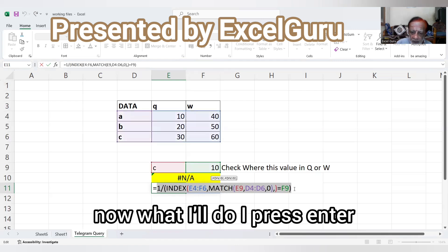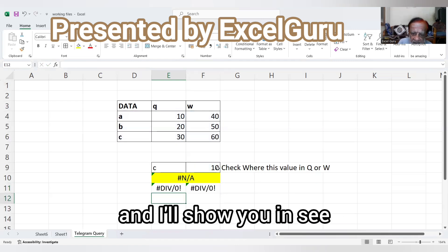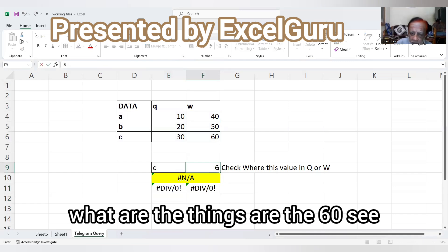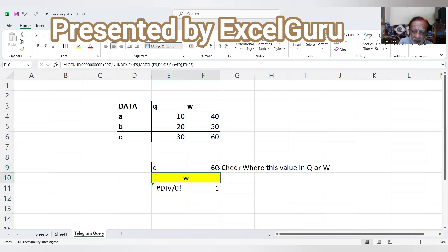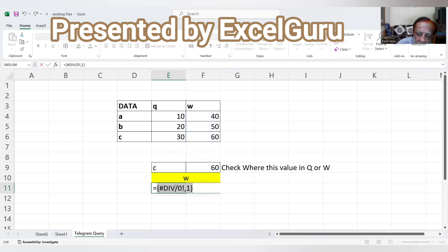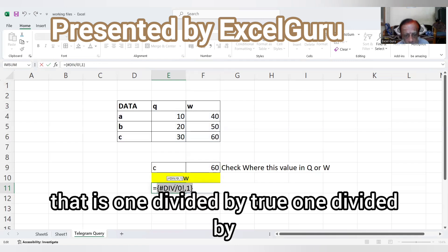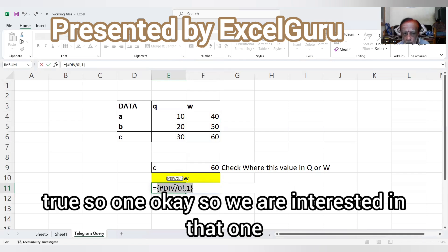Now I press F9. Okay, now what I will do: I press enter and I will show you. See what are the things. See what will happen. F2, F9. See, one is available. That is one divided by true, one divided by true, so one.